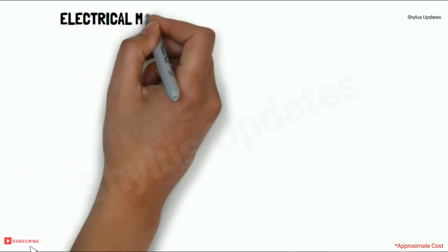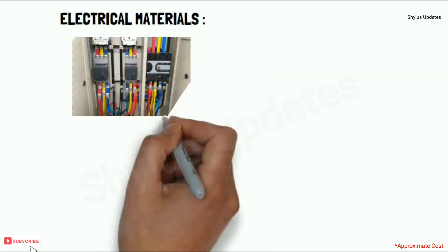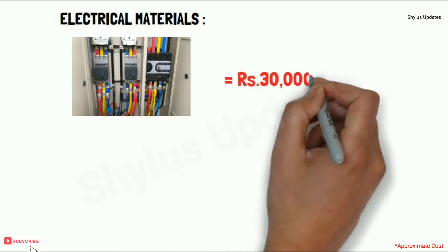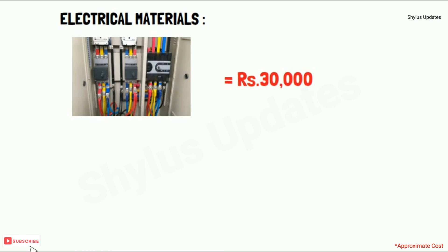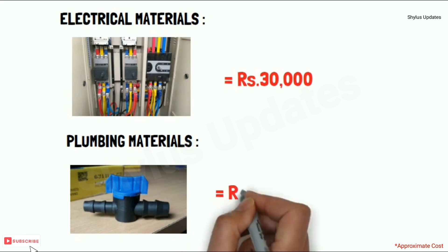For a 250 square feet house, the total cost for electrical materials would be rupees 30,000. The total cost for plumbing materials would also be rupees 30,000.